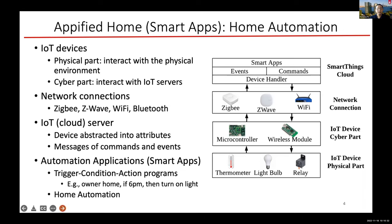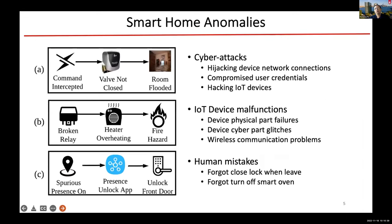That's the smart home IoT brief introduction. In this particular work, we were interested in detecting anomalies in a smart home. The anomalies could be caused by various reasons — they could be caused by cyber attacks. For example, an attacker either hacked into an IoT device in your home or compromised user credentials, such as using a weak or default password for a particular IoT device. Or it could be a malicious attack that hijacked the connection between the device and the cloud. Anomalies could also happen because the IoT device has malfunctions.